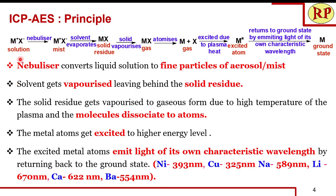When the solution enters the nebulizer along with the argon gas, it gets converted to an aerosol mist. When this is sprayed into the plasma at a temperature of almost 10,000 Kelvin, the solvent evaporates leaving behind the solid residue, which further vaporizes to form the gaseous compound. This atomizes, and the metal atom gets excited by the plasma heat. The excited atom returns back to the ground state emitting light of its own characteristic wavelength — for example, nickel at 393 nm and copper at 325 nm. All elements present will get excited and emit at their own characteristic wavelength.